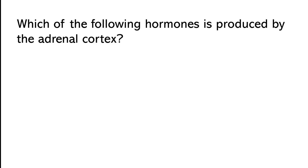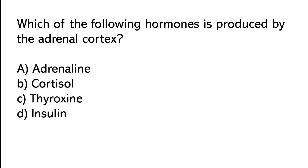Which of the following hormones is produced by the adrenal cortex? Adrenaline, Cortisol, Thyroxine, Insulin. So the correct answer is option B: cortisol.